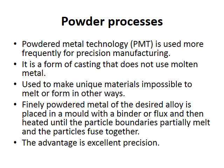Powder processing technology is used more frequently for precision manufacturing. It's a form of casting that doesn't use molten metal, and it's used to make unique materials that are impossible to melt or form in other ways. A fine powdered metal of the desired alloy is placed into a mold with a binder or flux, then heated until the particle boundaries partially melt and the particles fuse together. This process is known as sintering, and the key advantage is excellent precision.